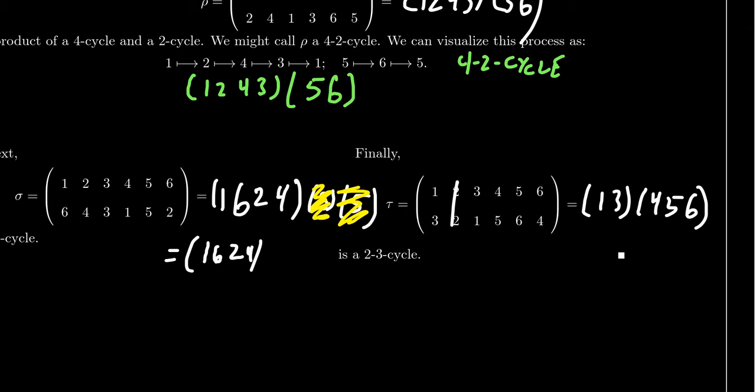Now, because of this notation here, we kind of ignore 1-cycles. If you looked at the identity, the identity would always look like (1)(2)(3)(4)... all the way up to N, it's just many 1-cycles. And so because we don't like to write 1-cycles, we actually just abbreviate the identity with just a 1.